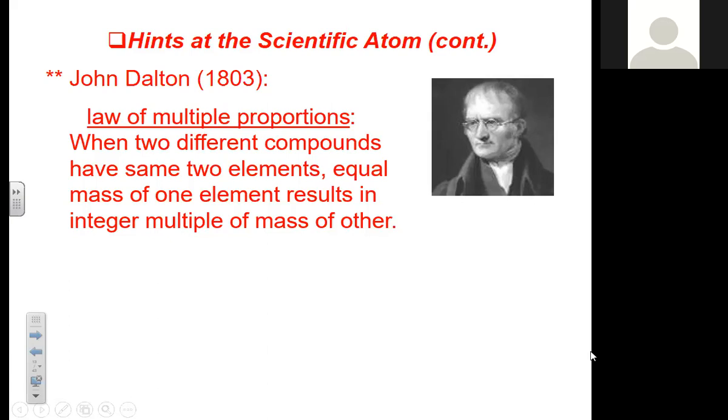These words right here, integer multiple. An integer is a whole number that's not negative and not zero. What Dalton was saying here is pretty much the same thing Democritus was saying, just a whole lot more science-y. He was saying that it's impossible to get 0.5 of something. You either have the atom or you don't.